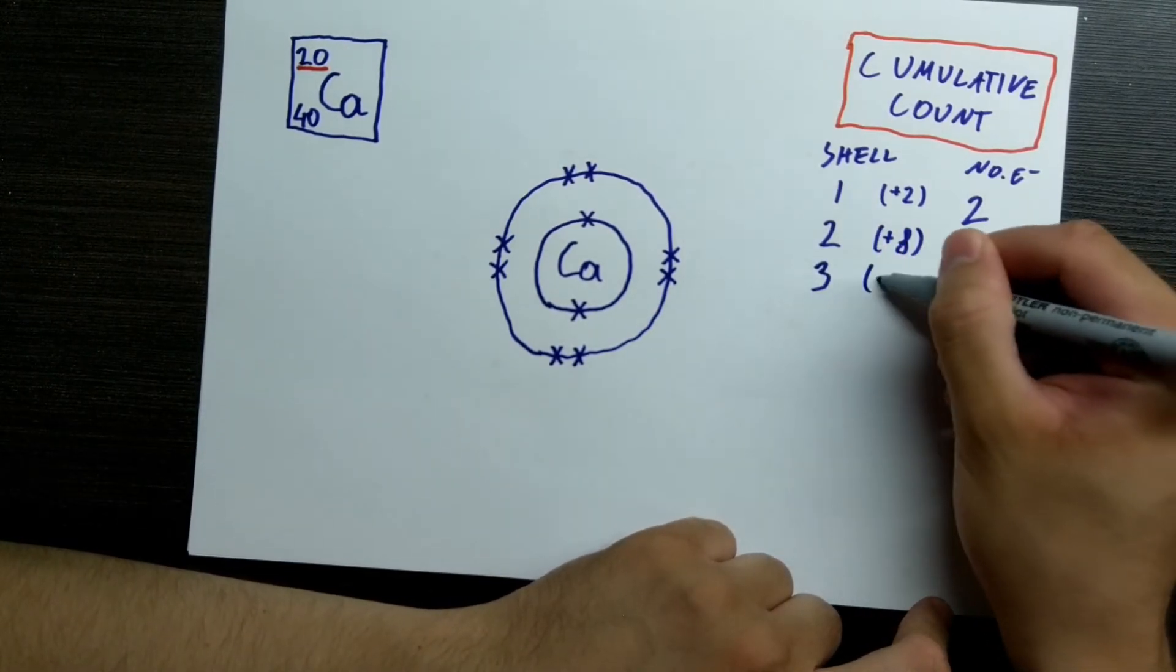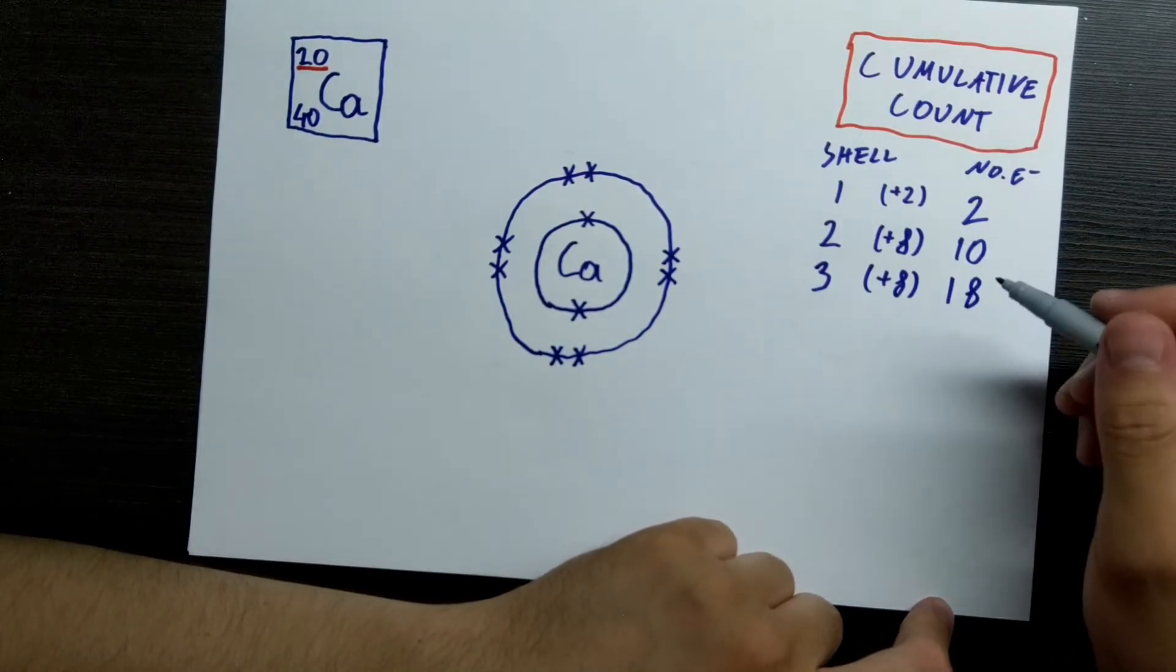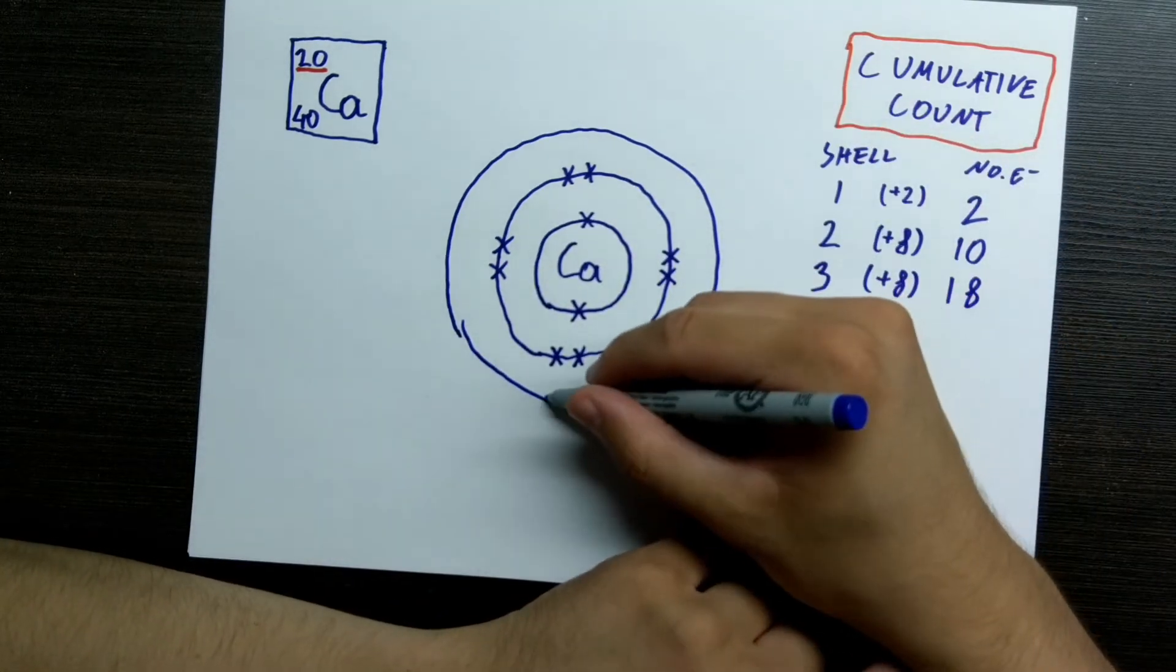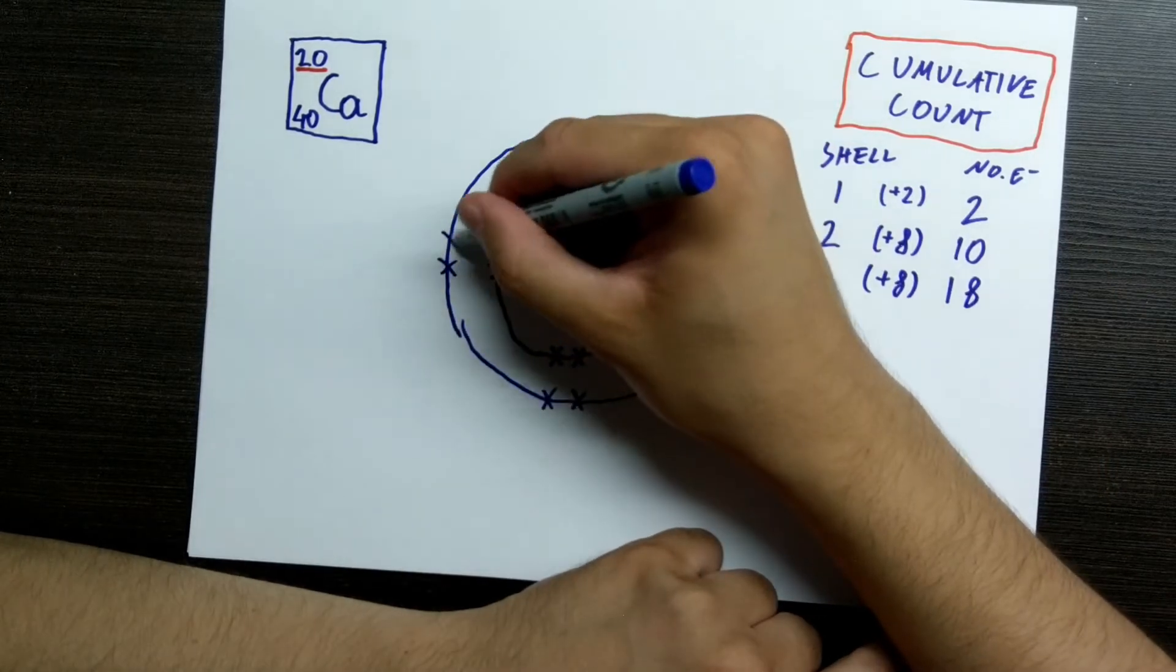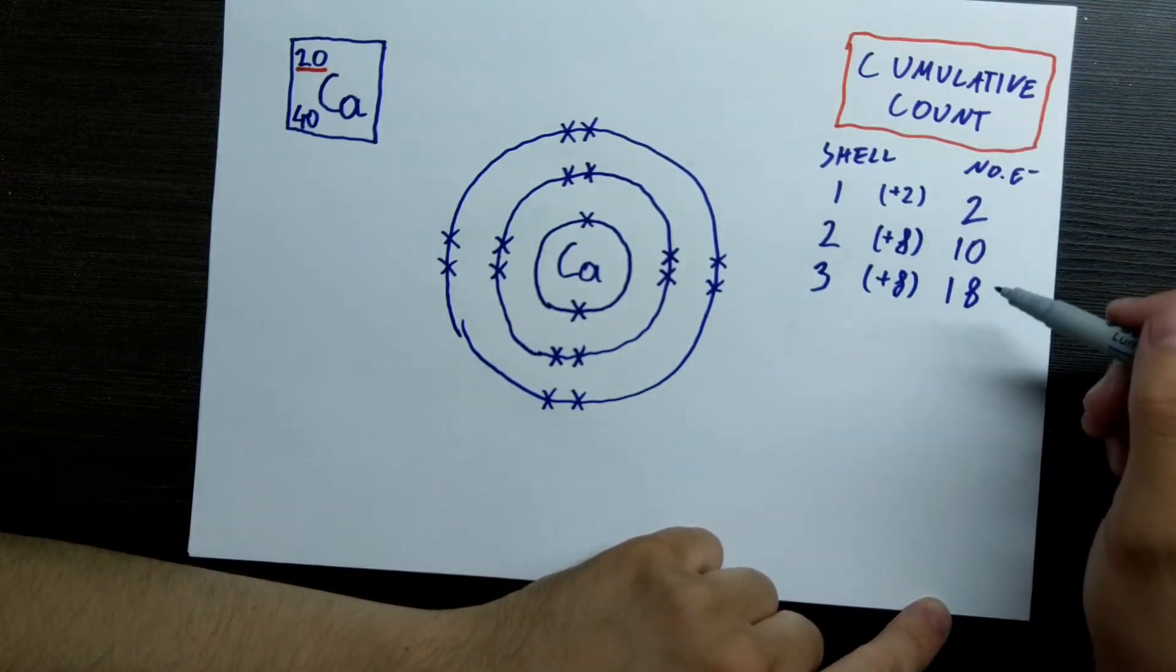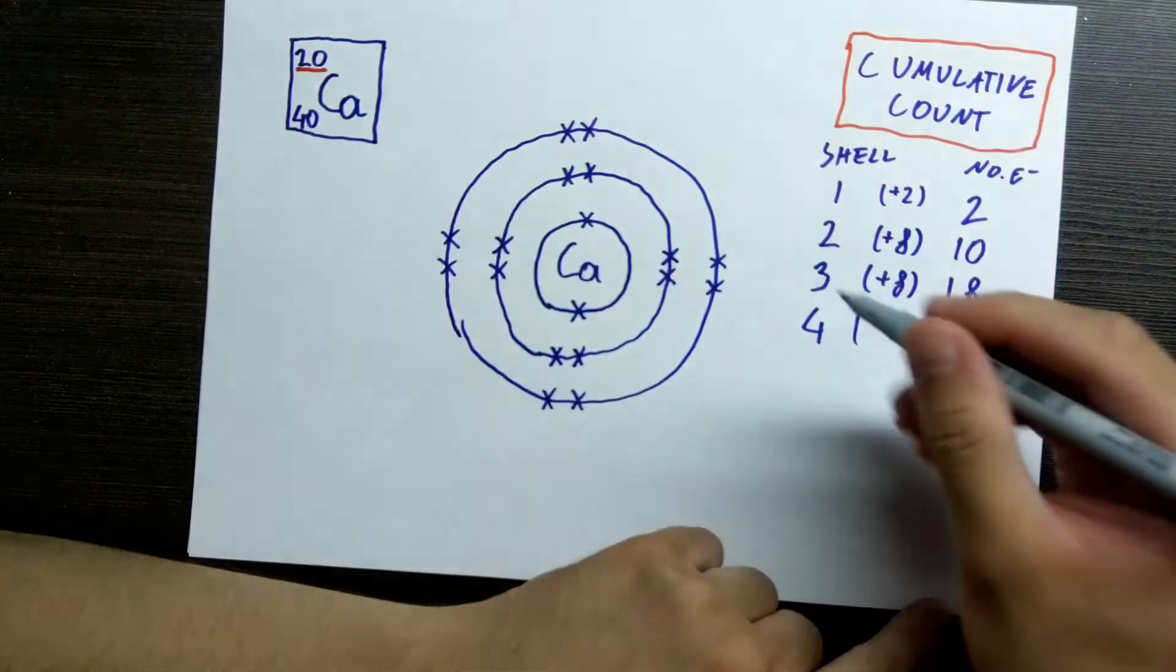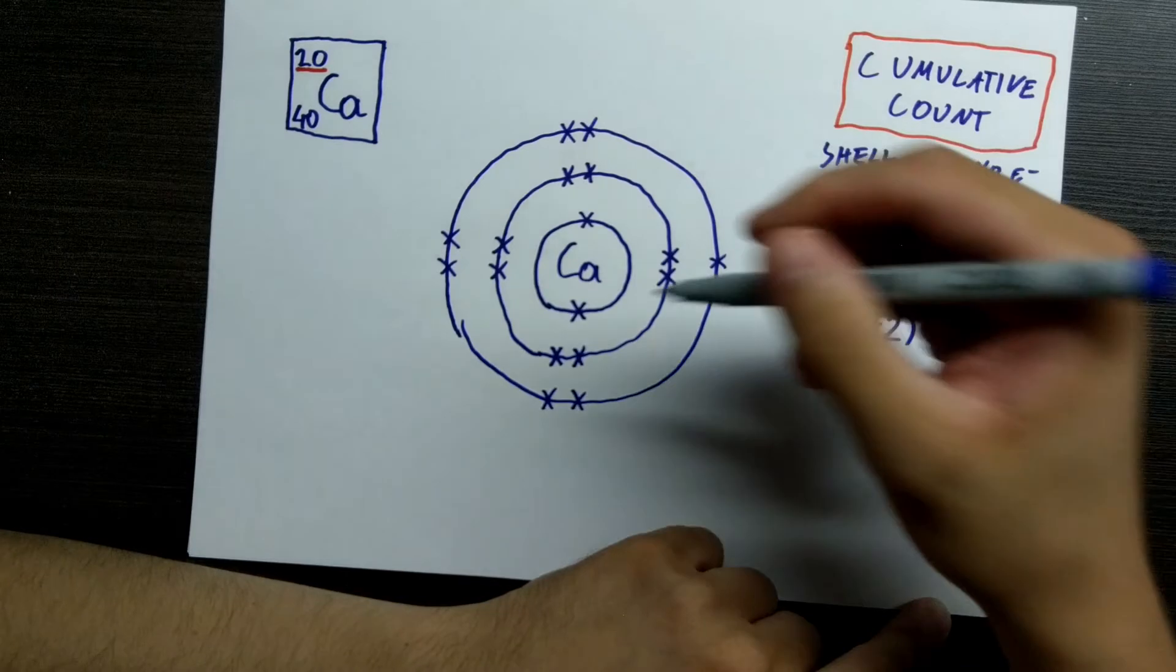In shell three, as we discussed, we have another eight, giving us a total of eighteen. Let's draw up another shell. Another eight, just the same way. And again bunched up, just behind these guys. Makes it super easy to count them. Now we have a total of eighteen. And now, as we know, we need to put the rest in the fourth shell. We got eighteen, we need to put in twenty. So we got two left over. And now we got twenty.